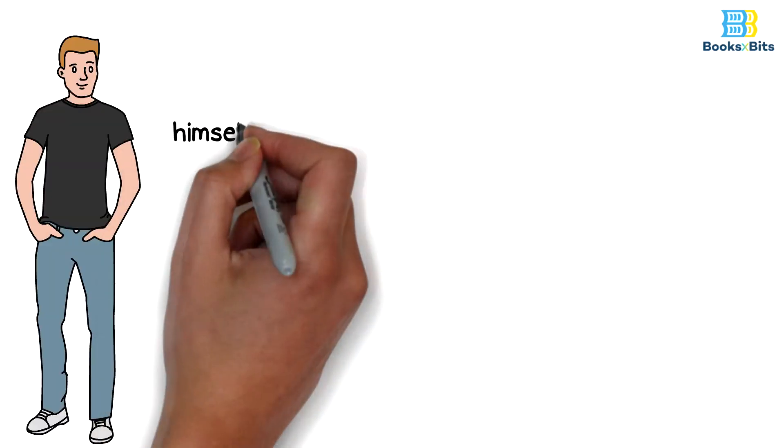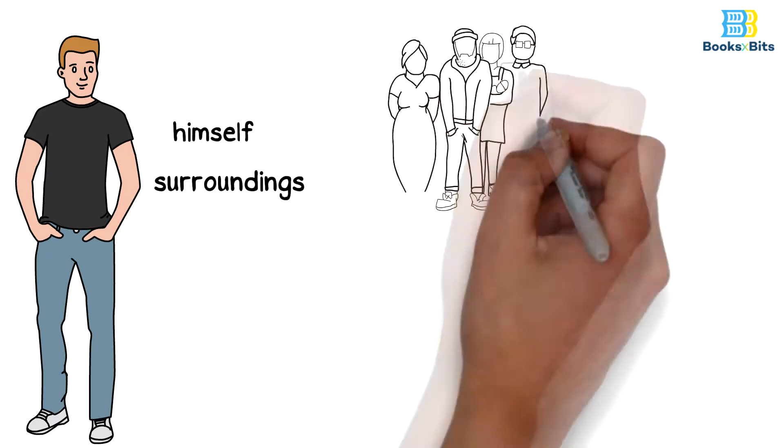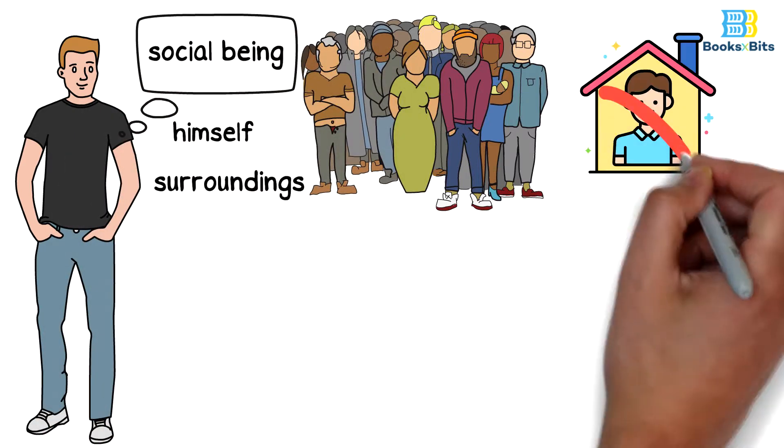There are rules that control the individual in his dealings with himself and with his surroundings. And there are also rules that control the individual's relations with his society. Man is destined to live in this life with his peers and his likes, as he is a social being who cannot be isolated and can't live alone.